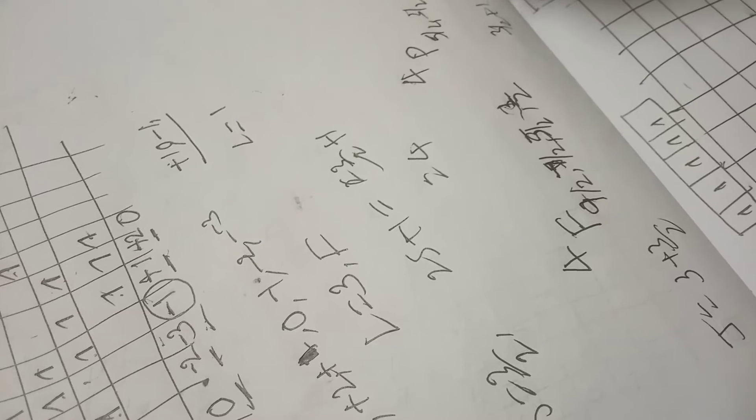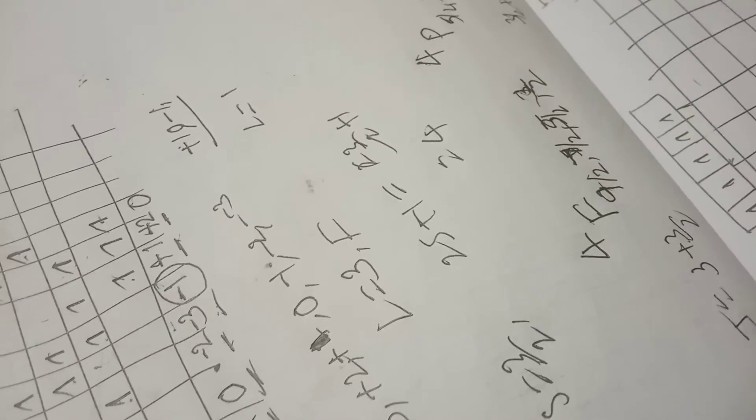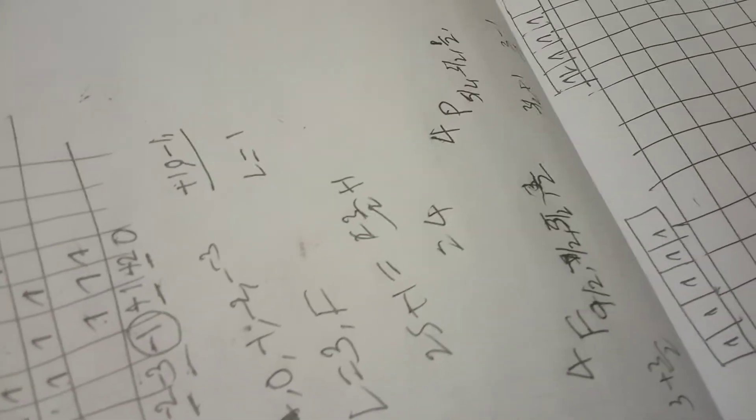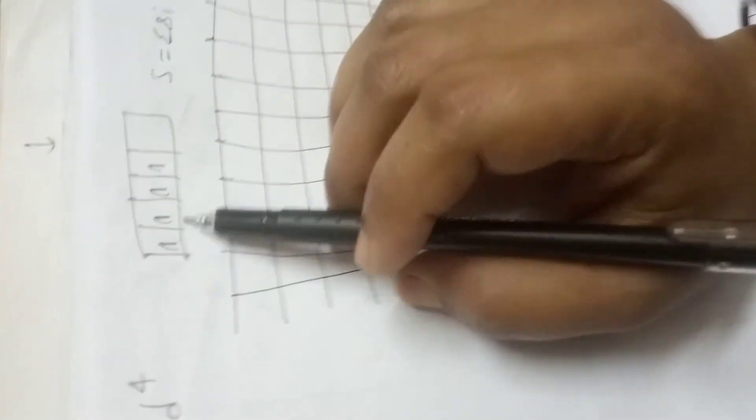So for the d4 configuration, we have four electrons. You can write: 0, plus 1, plus 2, minus 1, minus 2. We only need for the terms 4F and 4P. The ground state for the d3 configuration is 4F(3/2), whereas d7 is 4F(9/2).